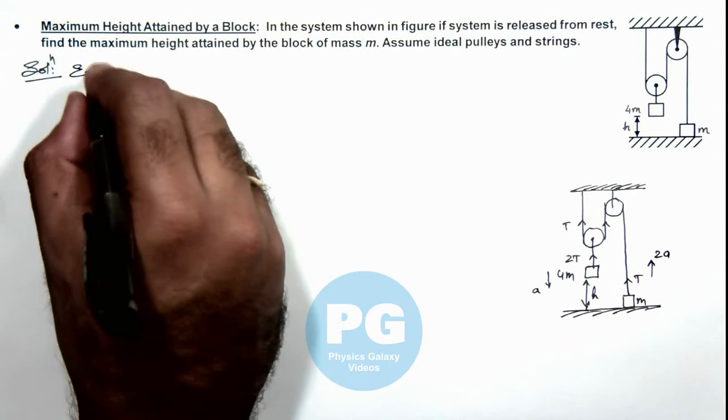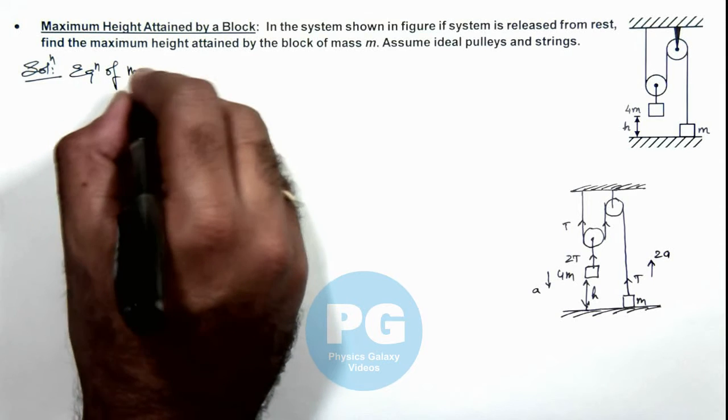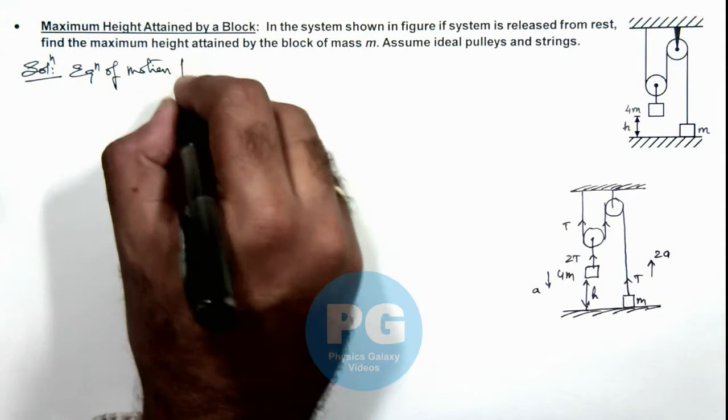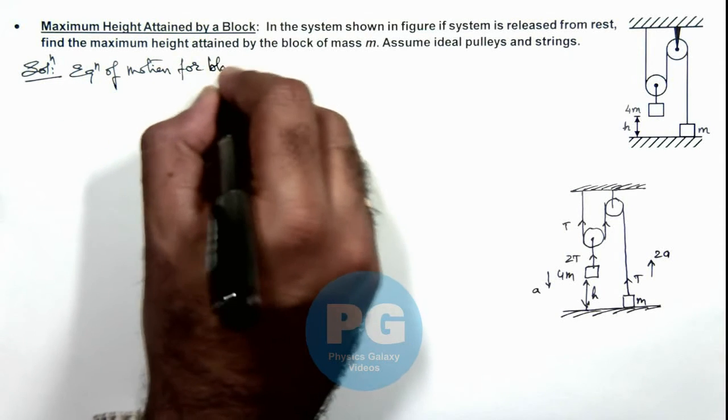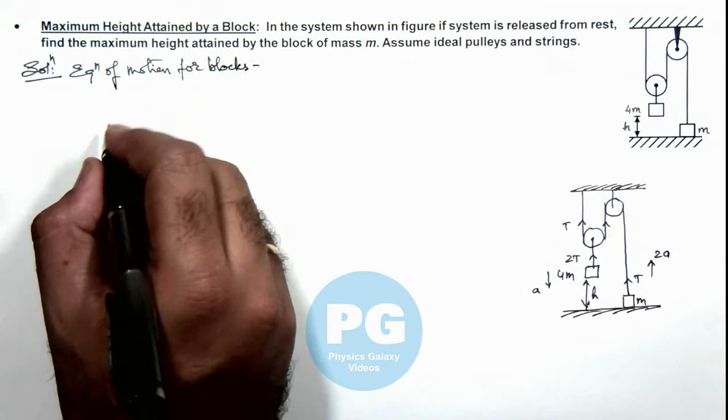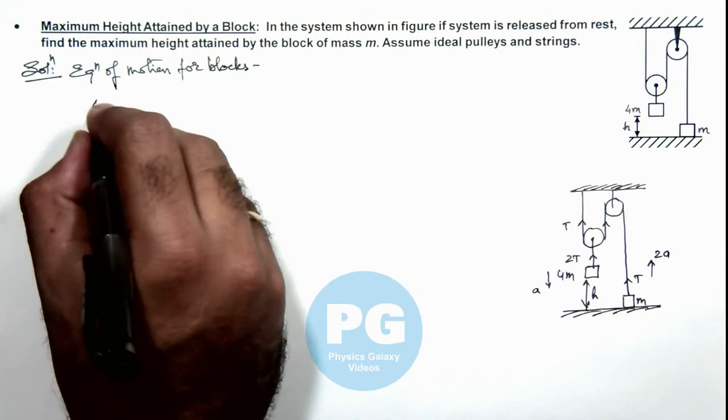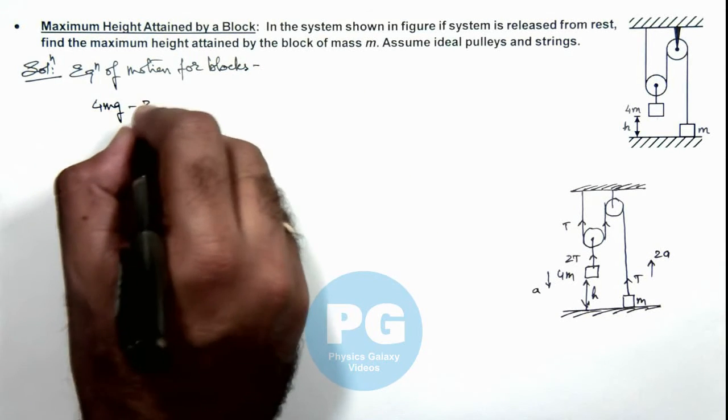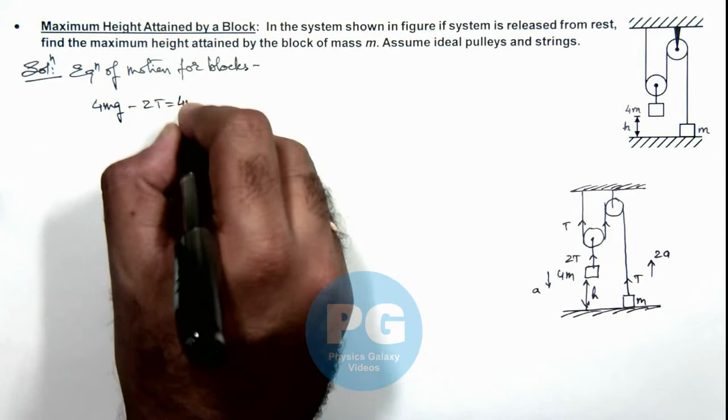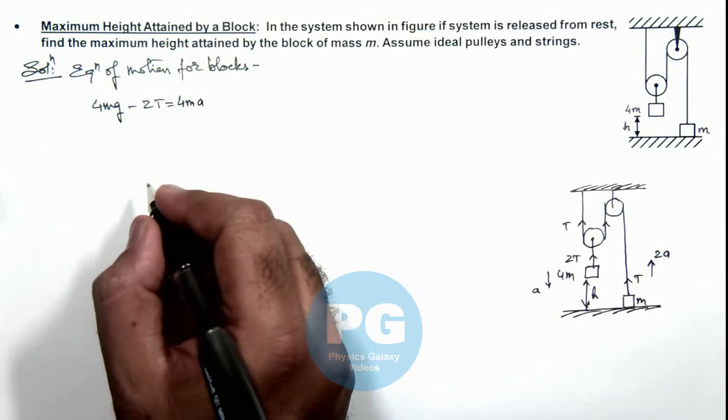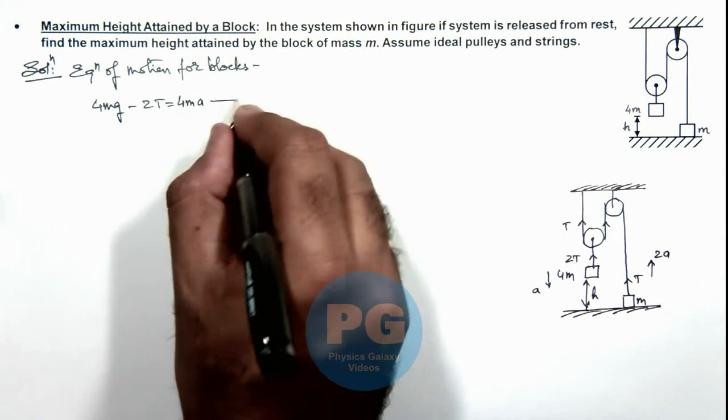If we directly write the equation of motion for the blocks, for this 4m block we can write: 4mg minus 2t is equal to 4m multiplied by its acceleration ay. This is our equation 1.